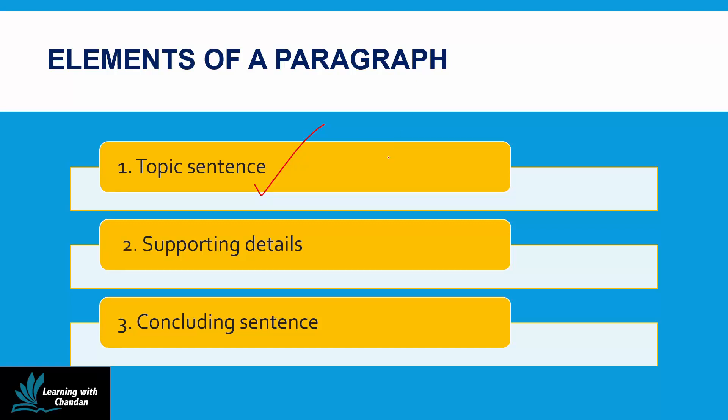Then we have supporting details, which make the body of the paragraph. It has facts, opinions, statistics, or any additional information about the main topic. And last of all we have the conclusion, which is actually a summary of all the main points discussed in the above paragraphs.